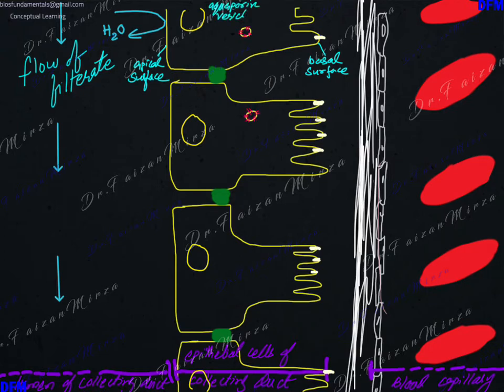Inside the collecting duct cells there are certain vesicles which are storing aquaporin channels. These are vesicles carrying these aquaporin channels present on the phospholipid bilayer of this vesicle. This vesicle is as good as a Golgi vesicle but a modified vesicle in which the product is not inside the vesicle but on its surface.